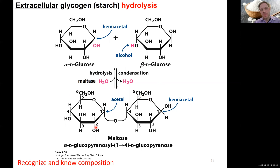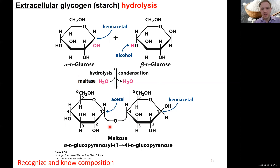Here's the mechanism highlighted: imagine a disaccharide portion of a starch branch with an α-1,4 glycosidic bond. The enzyme — maltase in this case for two glucose monomers, or alpha-amylase for full glycogen branches — brings in water and breaks the glycosidic bond. One hydrogen of the water goes to one alcohol, and the hydroxyl group goes to the other carbon. You release two free glucose molecules — simple hydrolysis.